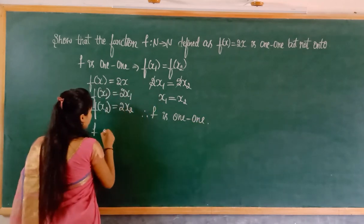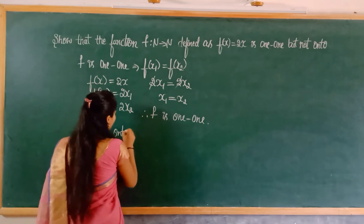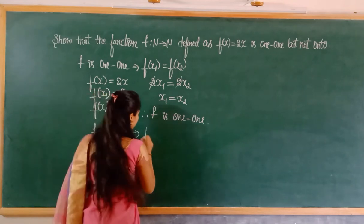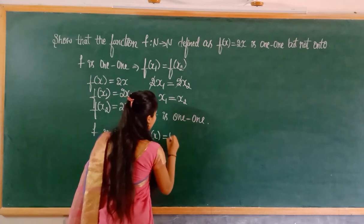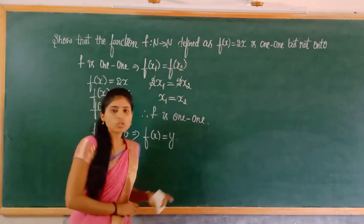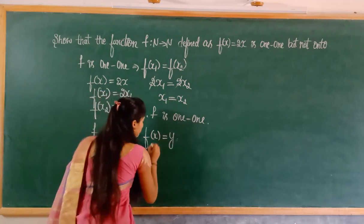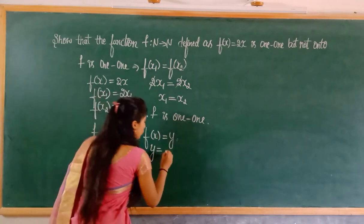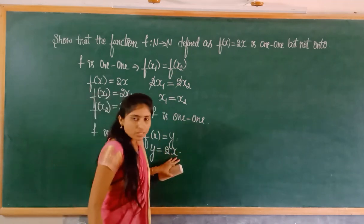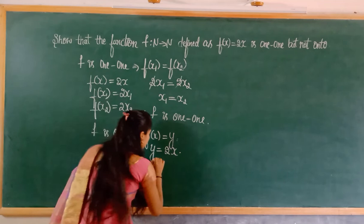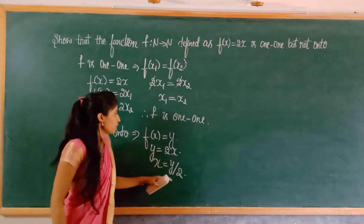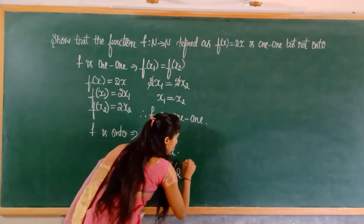For onto, the condition is f(x) = y. Since f(x) = 2x, we get y = 2x, so the value of x = y/2. But y/2 does not belong to the natural numbers.